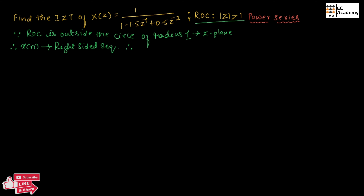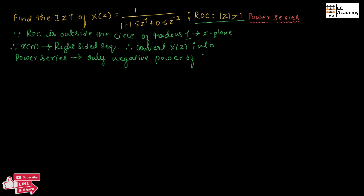Therefore, we need to convert X of Z into a power series having only negative powers of Z. We take the numerator and divide it by the denominator: 1 minus 1.5 Z inverse plus 0.5 Z to the power of minus 2.